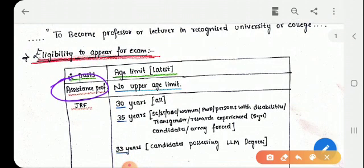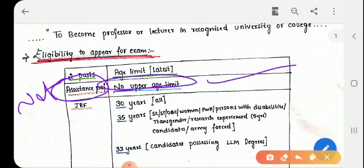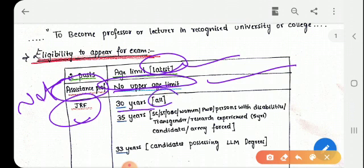To become professor or lecturer in recognized university and colleges you should qualify NET exam. The eligibility to appear for the exam is, for the post of assistant professor that is for NET, there is no upper age limit.